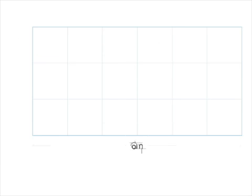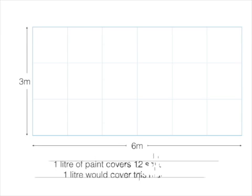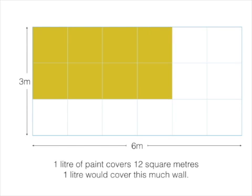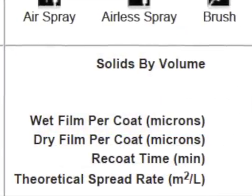This is termed as the spread rate of paint. In this example, we see a wall that is three meters high and six meters wide. So if a paint had a spread rate of 12 square meters per liter, then this is how much area of the wall one liter would cover.